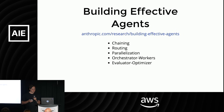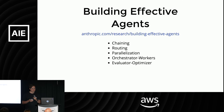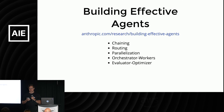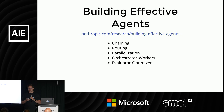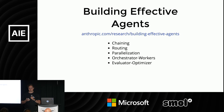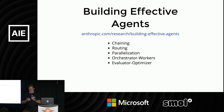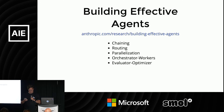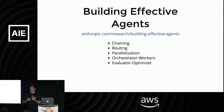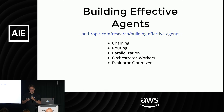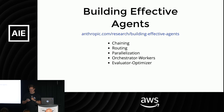In December of last year, Anthropic did an excellent post about how to build agents, in which they codified some design patterns that we immediately recognized from our own work building agents. I'm going to go through them very quickly. They are: chaining, routing, parallelization, orchestrated workers, and evaluator optimizers.